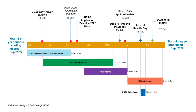If you want equal consideration and to give universities more time to look at your application — and yourself more time to consider your university choices — then I would make the application by the earlier deadline of the 26th of January if you can. If you make your application by the 26th of January, universities will respond to you by the 19th of May, and you then have until the 9th of June to declare your firm or insurance choice.